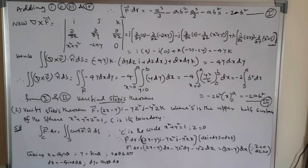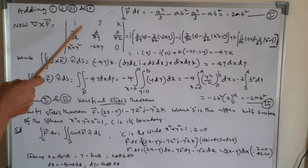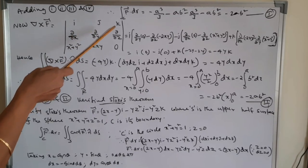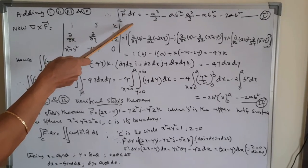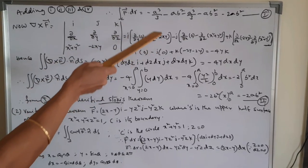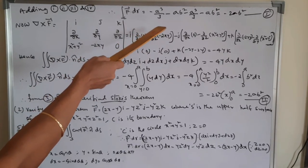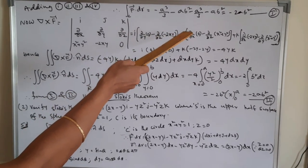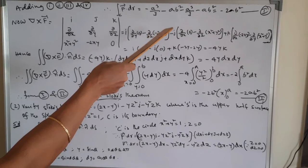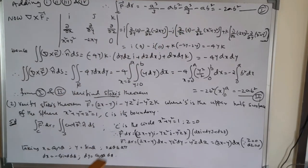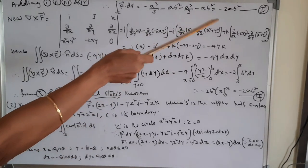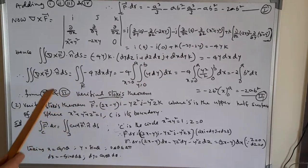Adding equations I, II, III, and IV, we get the integral of F̄ · dr over C = a³/3 − ab² − a³/3 − ab², which simplifies to −2ab². Consider this as equation (1).